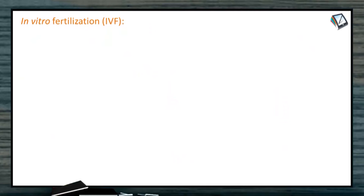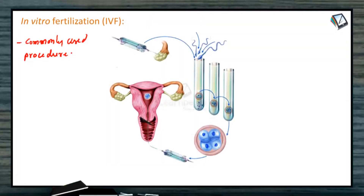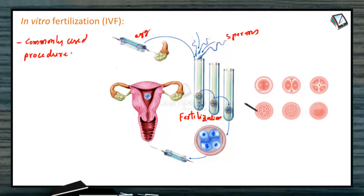Let us look at the main techniques used in Assisted Reproductive Technologies. The first one is in vitro fertilization, one of the most commonly used procedures. Here, the eggs are combined with the partner's sperms in a dish or in a test tube — that is why it is called in vitro, meaning fertilization occurs inside the test tube. Once fertilization has occurred, the resulting embryos develop for three to five days.